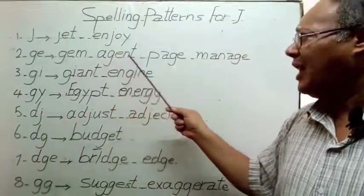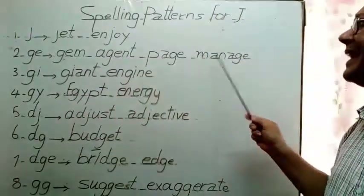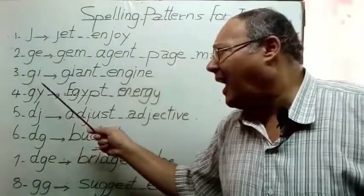The second pattern is the letter G followed by E or I, as in: Gym, Agent, Page, Manage.